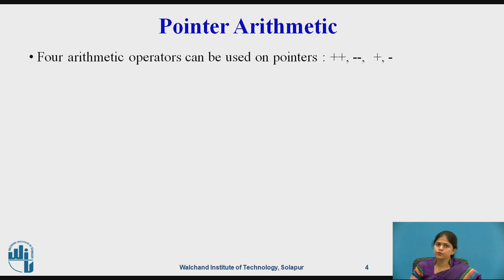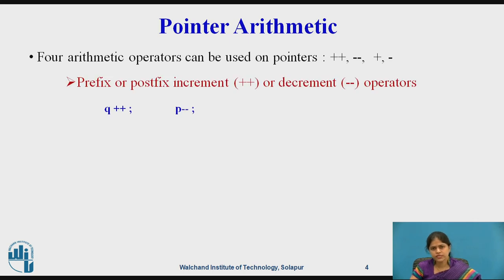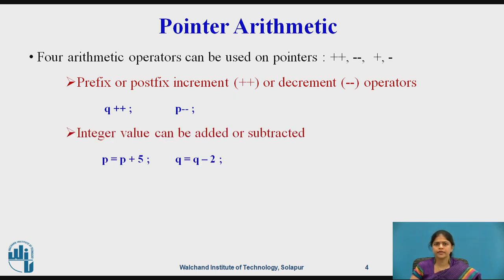Four arithmetic operators can be used on pointer variables: increment, decrement, addition, and subtraction. Prefix or postfix increment or decrement operators can be applied on pointers — so p++ and q-- can be done. An integer value can also be added or subtracted from a pointer, so p = p + 5 is a valid operation, and similarly q = q - 2 can be done. We can add or subtract a constant value to a pointer.